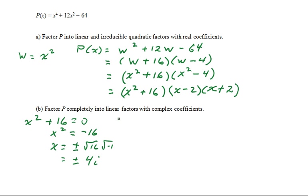And so, x squared plus 16 has a zero of 4i, so it has a factor of x minus 4i. It has a zero of negative 4i, so it has a factor of x minus negative 4i, which would be plus 4i. Then we recopy the x minus 2 and the x plus 2.